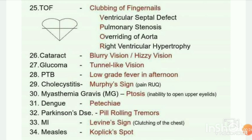Next: cataract — blurry vision, hazy vision. Glaucoma — tunnel-like vision. PTB — low-grade fever in the afternoon. Cholecystitis — Murphy's sign: pain in the right upper quadrant.